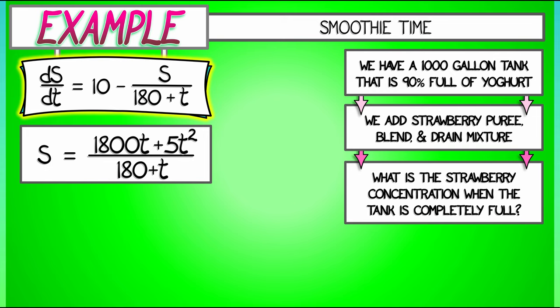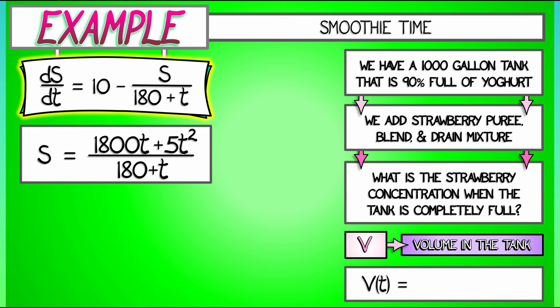And now we're nearly done. We have our solution S as being 1800t plus 5t squared divided by (180 plus t). But what is it we're solving for again? That's right, we want the concentration C. In order to get that, we need to divide by the volume V.